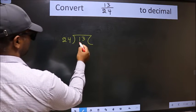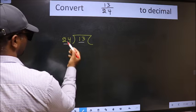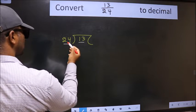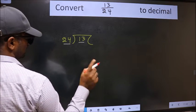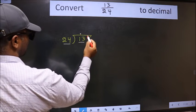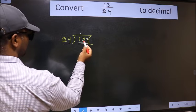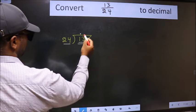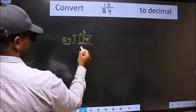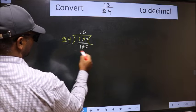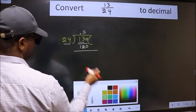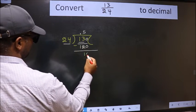Here we have 13 and here 24. 13 is smaller than 24, so what we should do is put a dot and take 0, making it 130. A number close to 130 in the 24 table is 24 times 5 equals 120. Now we should subtract. We get 10.